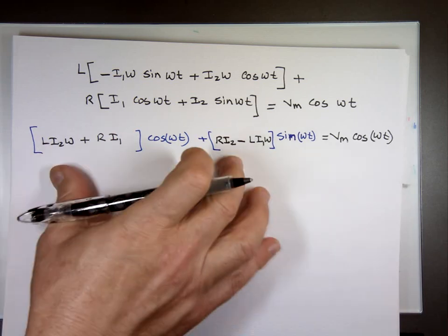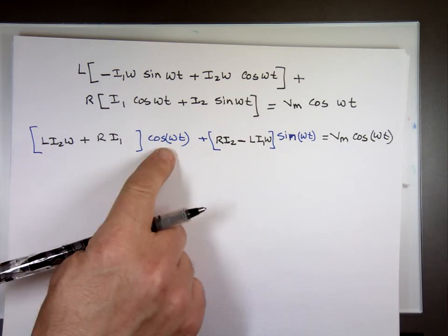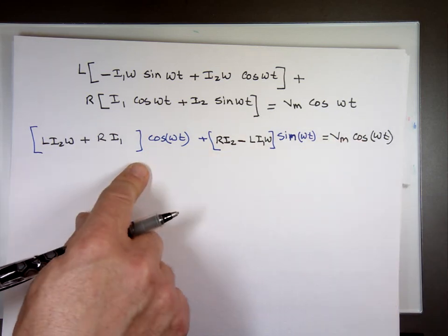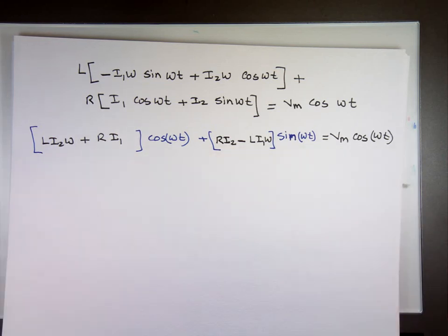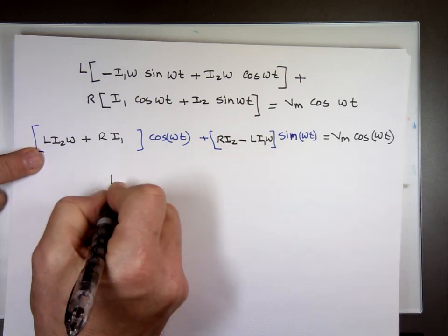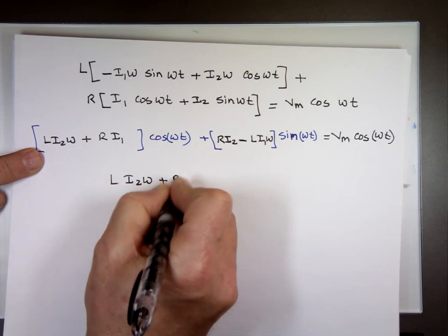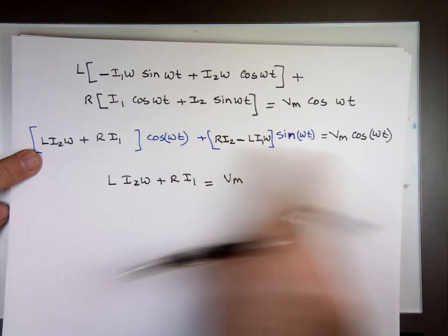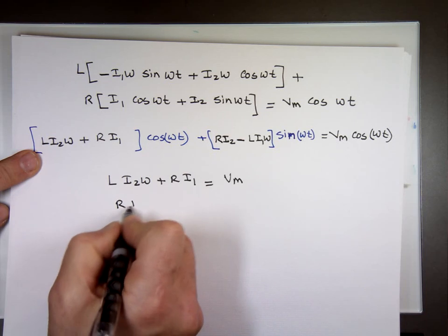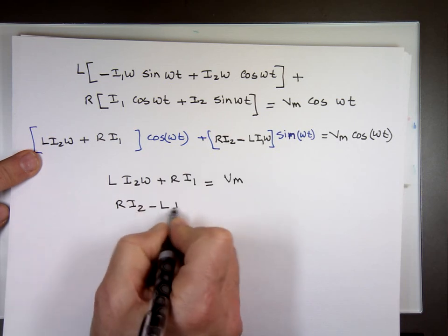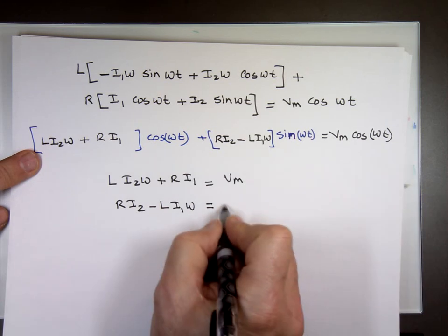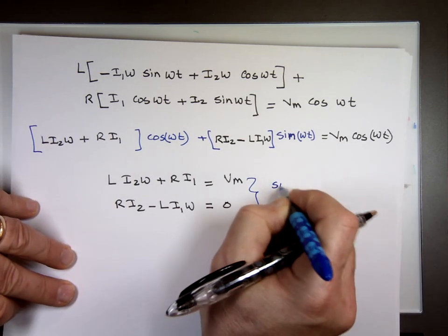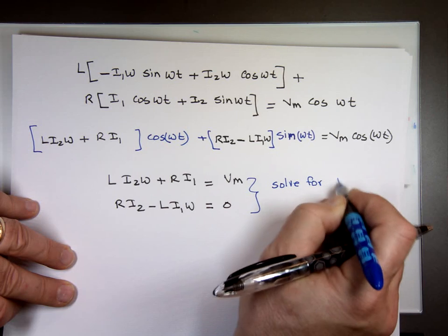All of that equals Vm cos ωt. For this side to equal that side, the coefficient of the cosine on this side must equal the coefficient of cosine on that side, and the coefficient of the sine on this side must equal the coefficient of the sine on that side. So the cosine on this side is what? L·I2·ω + R·I1 equals Vm. And the coefficient of the sine on this side, R·I2 - L·I1·ω, has to equal the coefficient of the sine on that side, which is zero. There is no sine there. We have two equations by two unknowns. We can solve for I1 and I2.